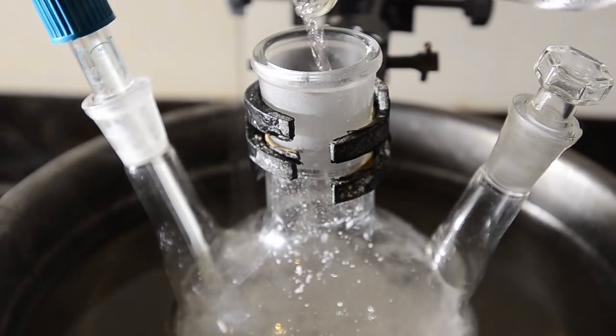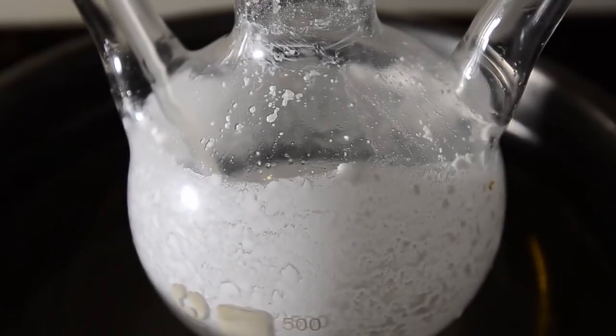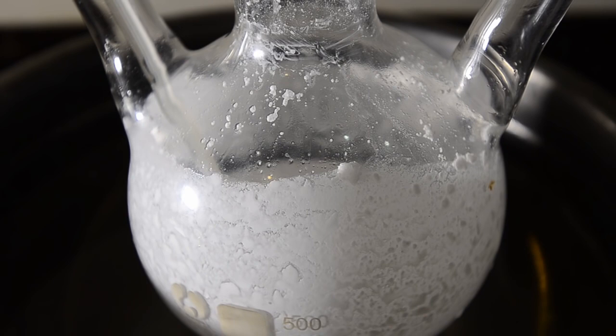Once the acetyl chloride is completely added, swirl the flask and you'll notice some more heat generated. The contents of the flask turns into a liquid slurry.